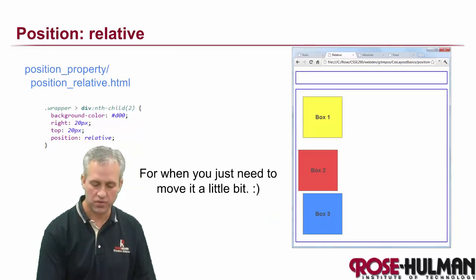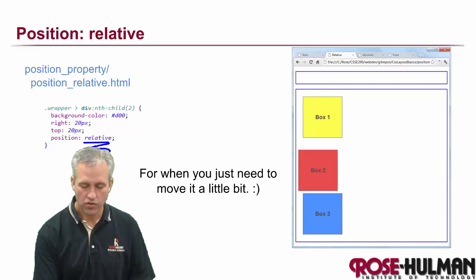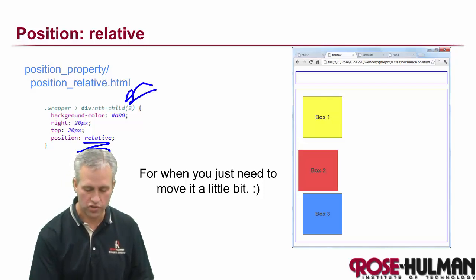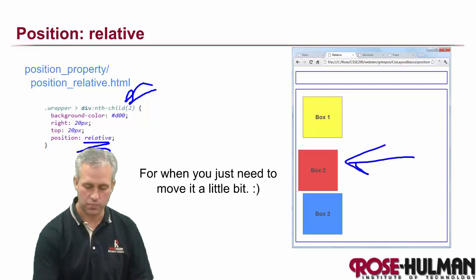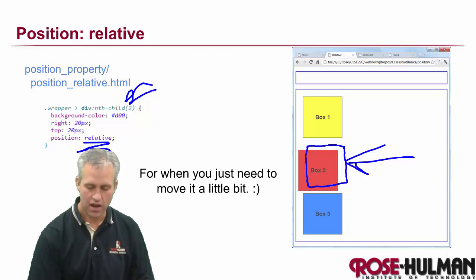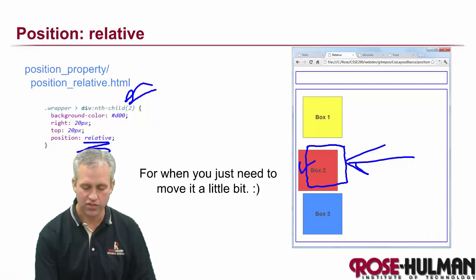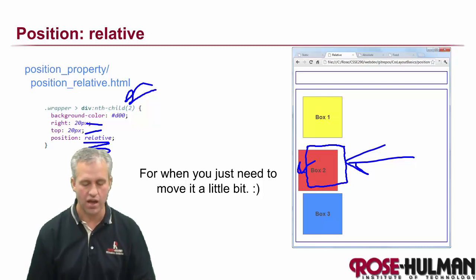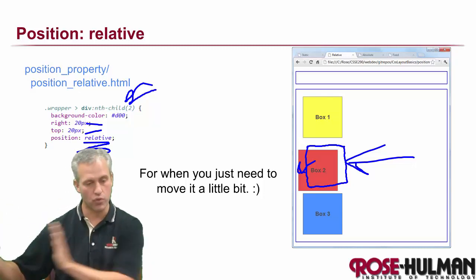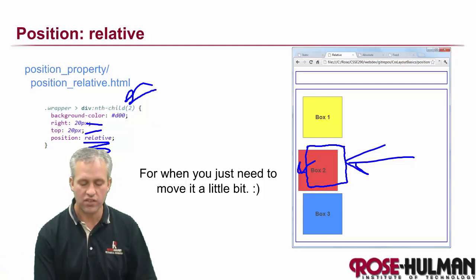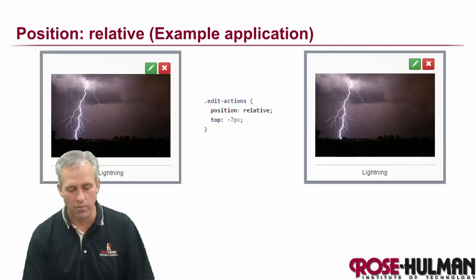Now if we change only the position of child 2 to relative, a lot happens. The space reserved for child 2 stays the same — other elements still respect that space — but child 2 itself moves. It moved 20 pixels to the right and 20 pixels down, or rather 20 pixels from the right offset, so it actually shifts left. The space is preserved but the element visually moves.